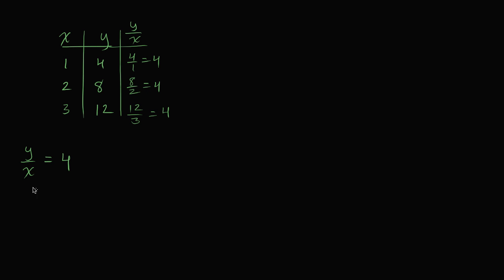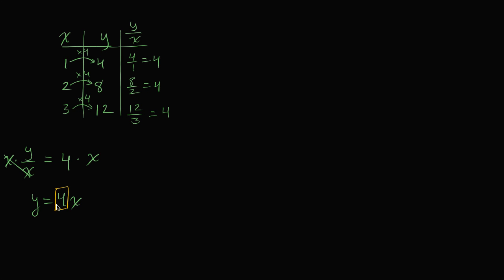If I multiply both sides by x, I'm left with y on the left-hand side: y is equal to four x. And you can see that's the case — x is one, four times that is four; x is two, four times that is eight. We are multiplying by four each time.